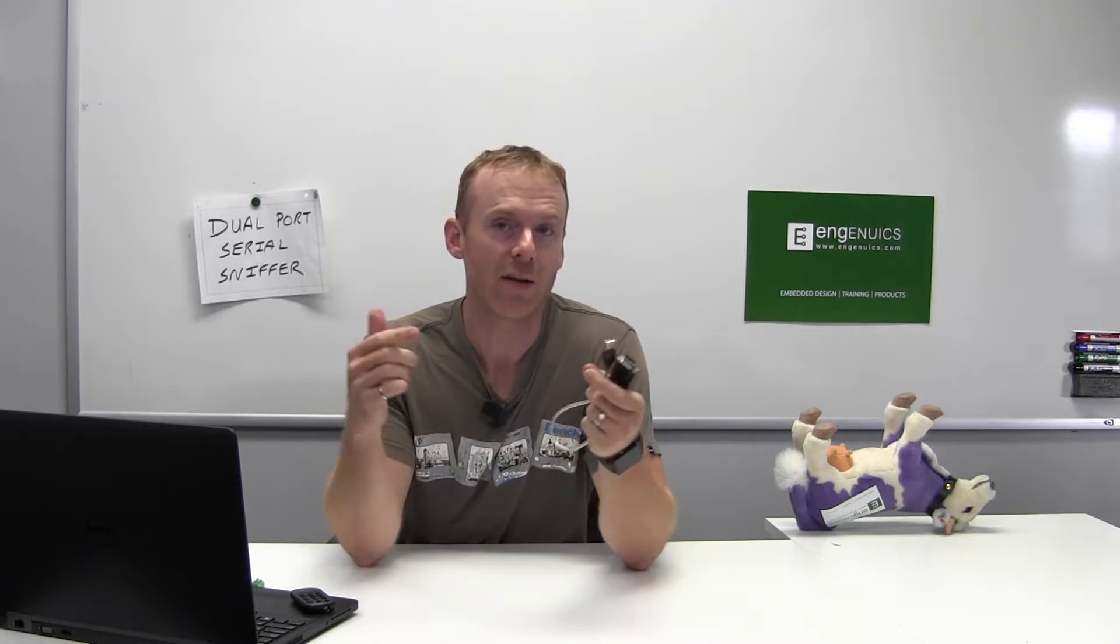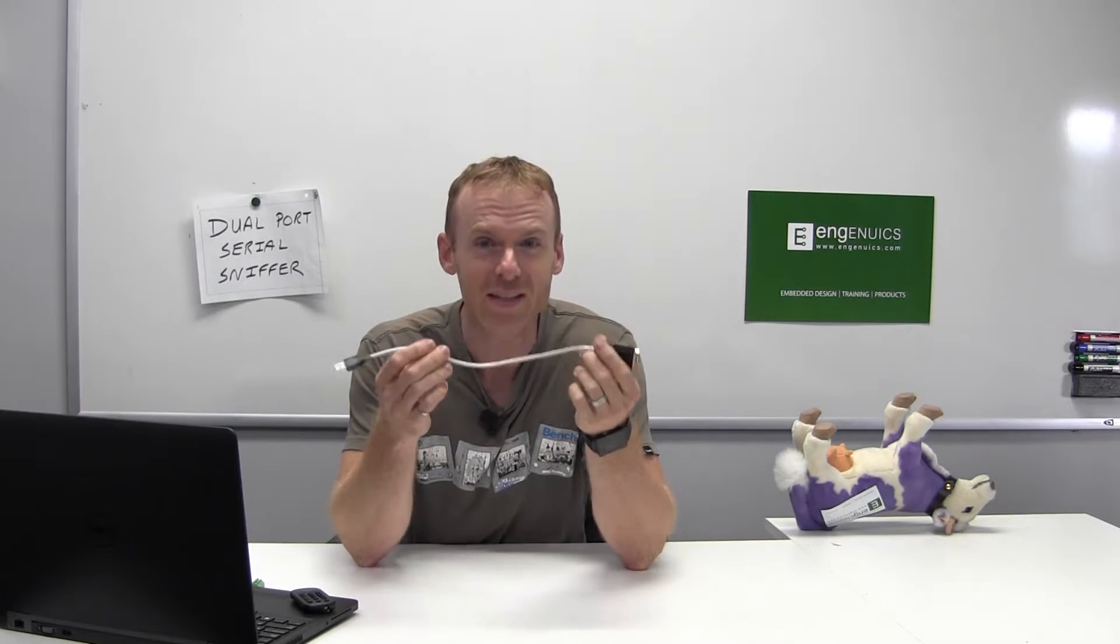So up until now, like I've said before, we're stuck with these. We have to have RS-232 level signals, we have to have some sort of translator on our board. If you want to sniff a line, if you want to actually look at the transmit and receive lines together, you need two of these, right? 30 bucks a piece. Not very convenient, plus all that translation.